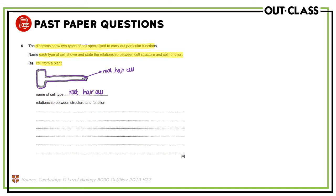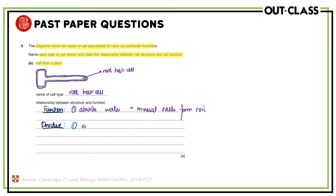What is the relationship between the structure and function of a root hair cell? The function of the root hair cell is that it absorbs water and mineral salts from the soil. The first adaptation is the elongated root hair, which increases the surface area for maximum water absorption.